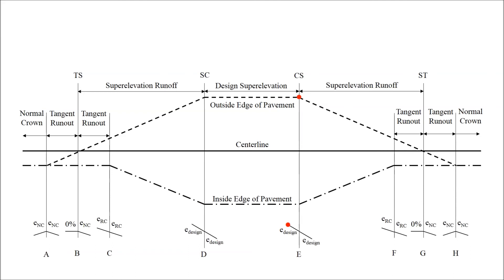Point E is the final point for the simple curve, the location where the design superelevation will begin the transition back towards normal crown. The entire pavement width will rotate simultaneously about the center line. Point E is the CS point, signifying the end of the simple curve and the beginning of the spiral transition for a spiraled curve.